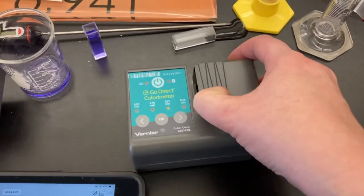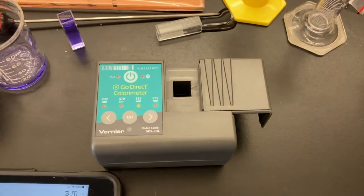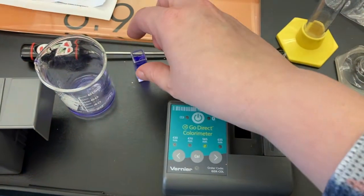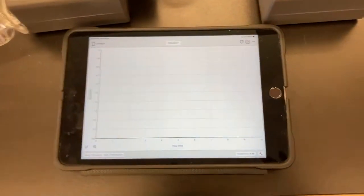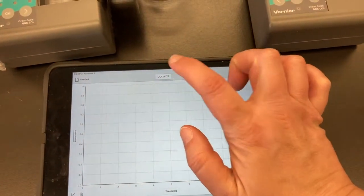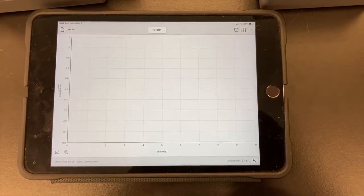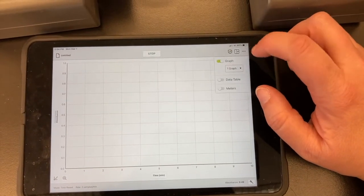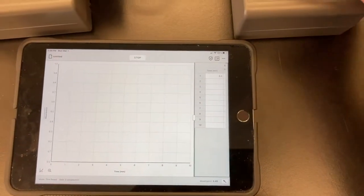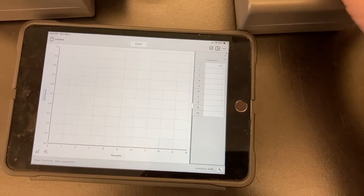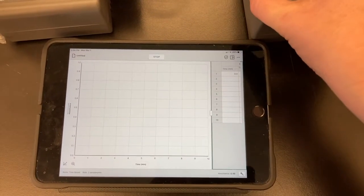Now we want to keep our cuvette from getting warm by what's going on inside the colorimeter. So what we are going to have to do is take it out after each reading. So we can stick it in and then we can start the collection. And we will wait for that first data point to appear and one thing that you can do is you can show the data table and so you will see when that first data point appears.